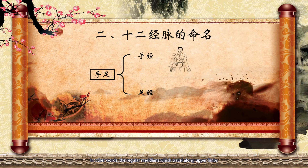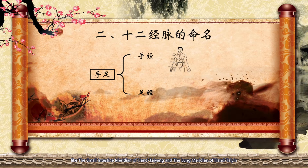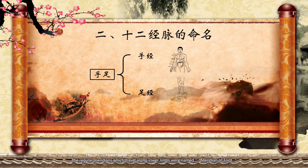In other words, the regular meridians which travel along upper limbs were named meridian of hand, like the Small Intestine Meridian of Hand Taiyang and the Lung Meridian of Hand Taiyin. The regular meridians which travel along lower limbs were named meridian of foot, like the Spleen Meridian of Foot Taiyin.